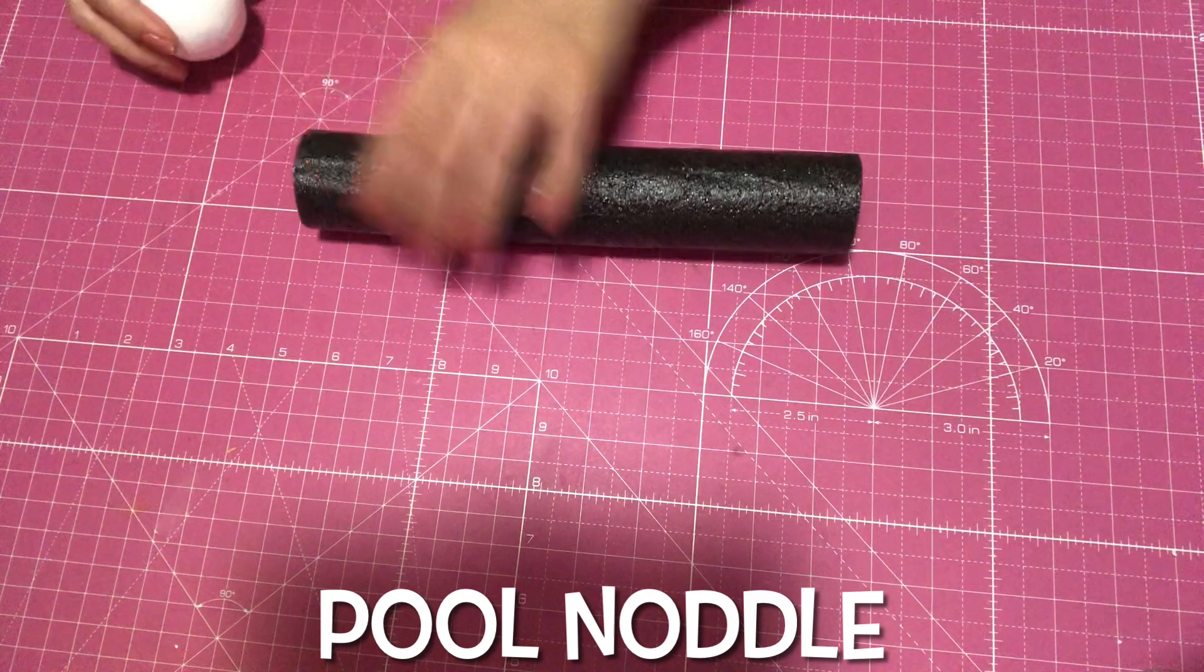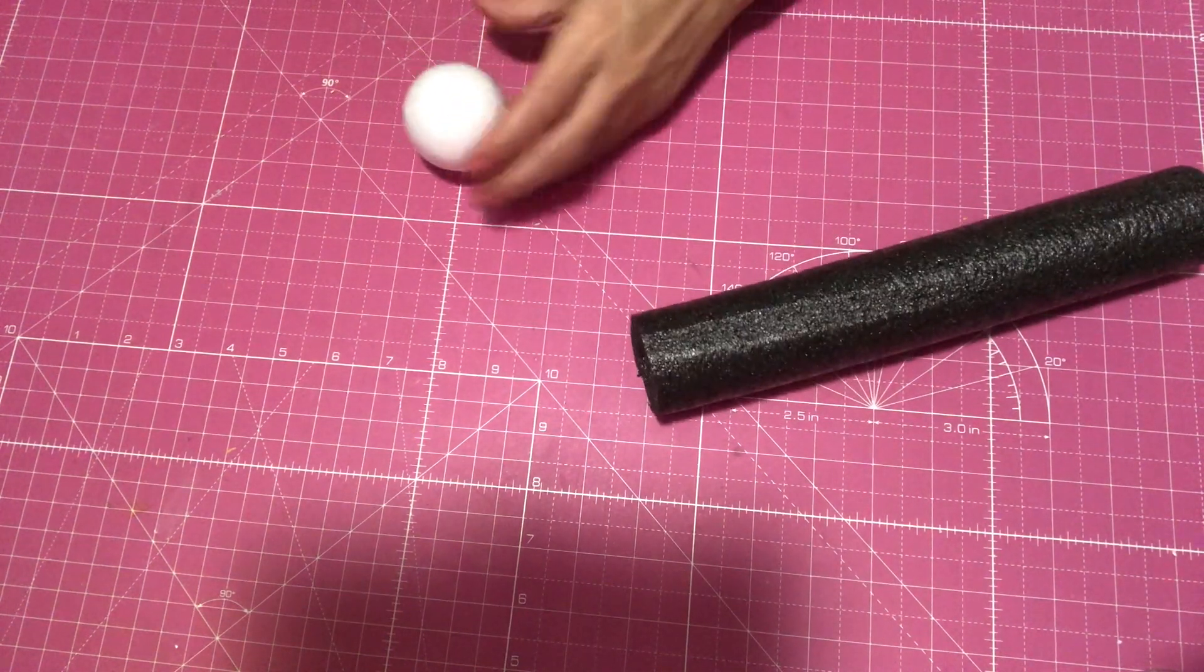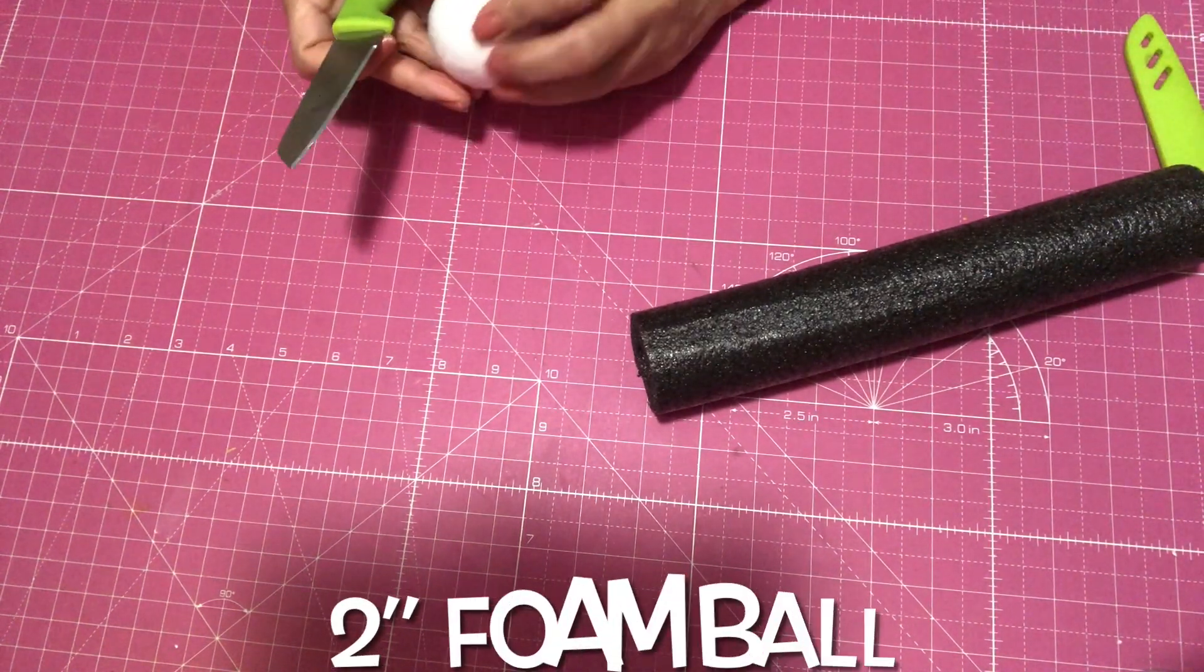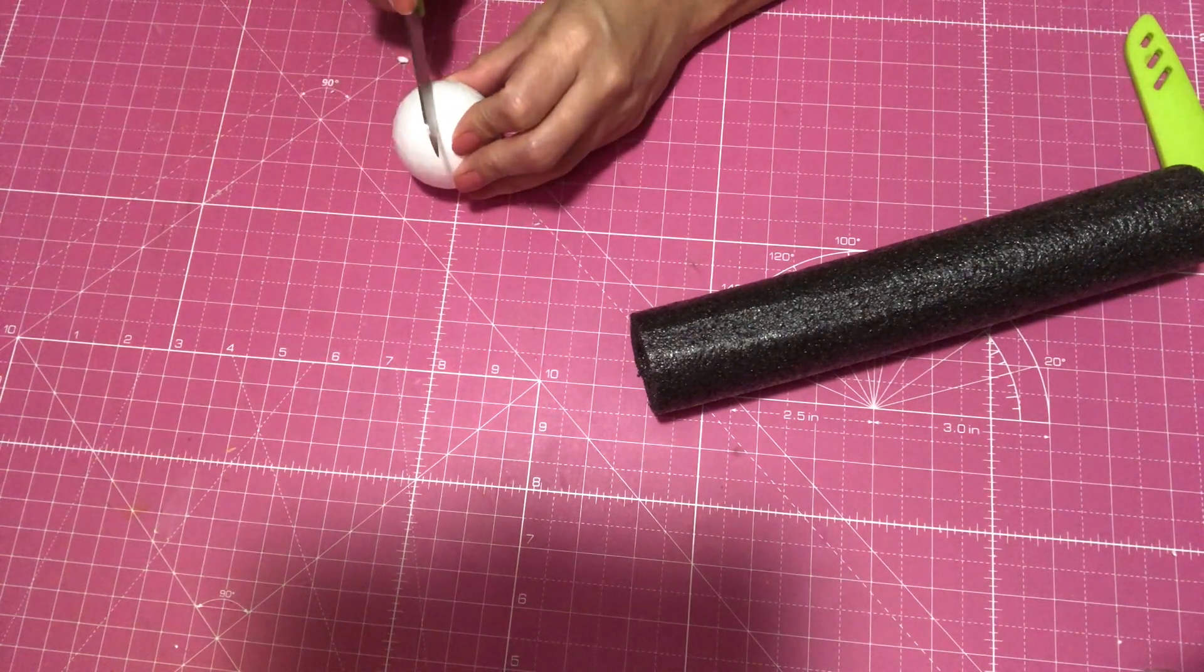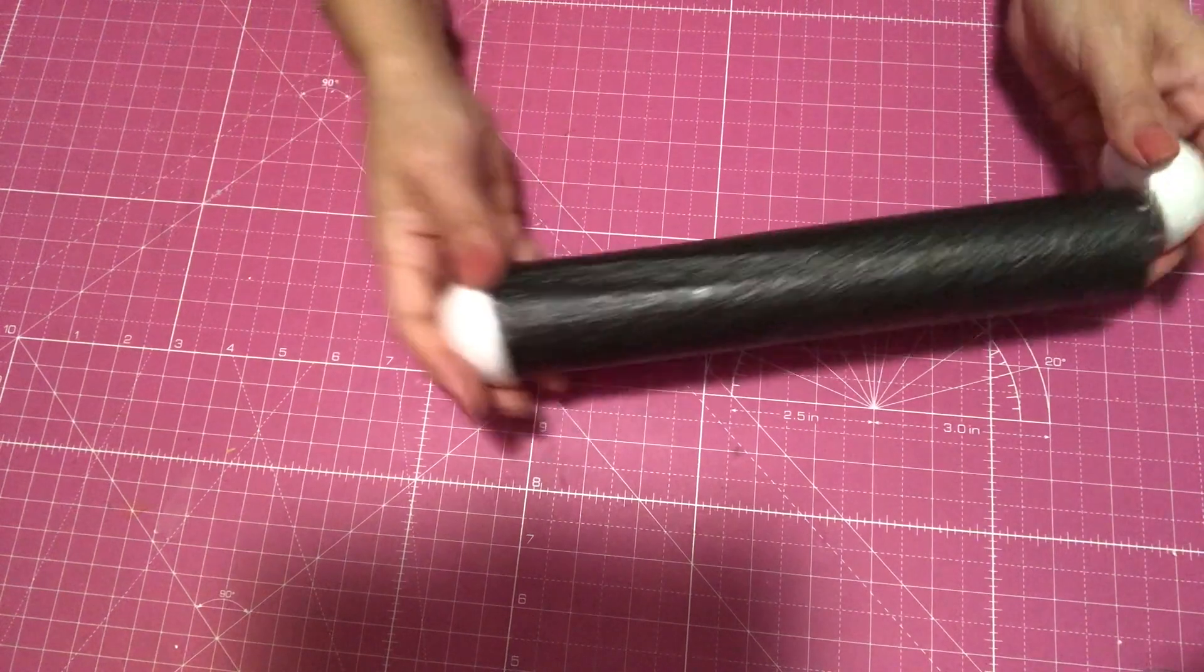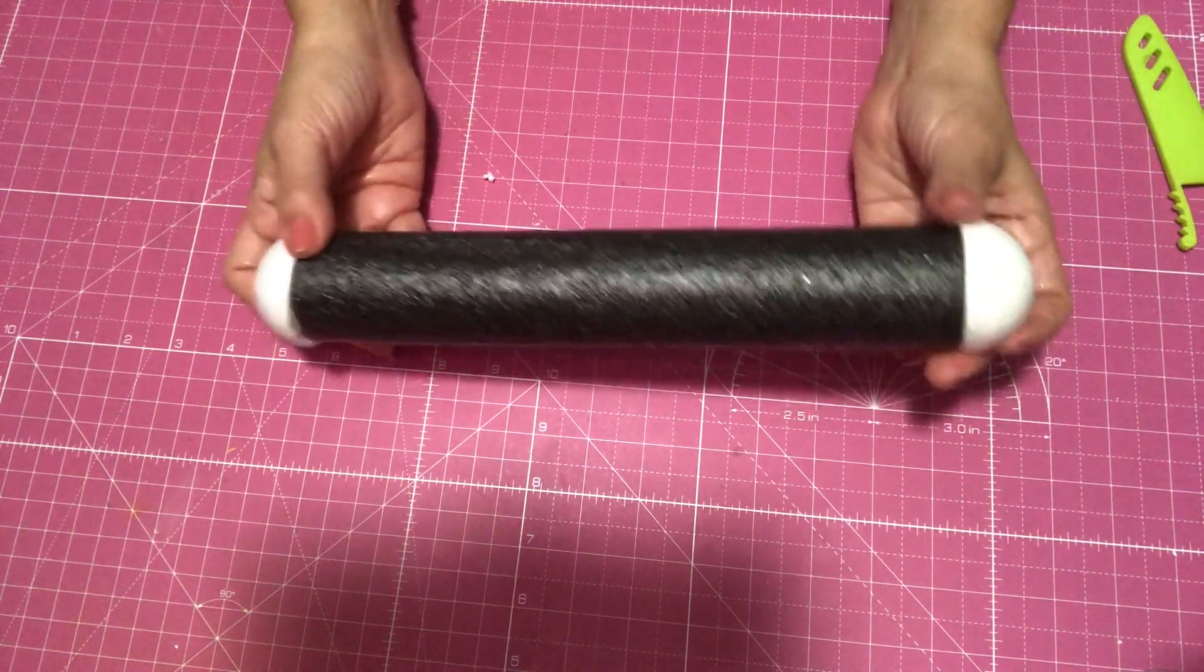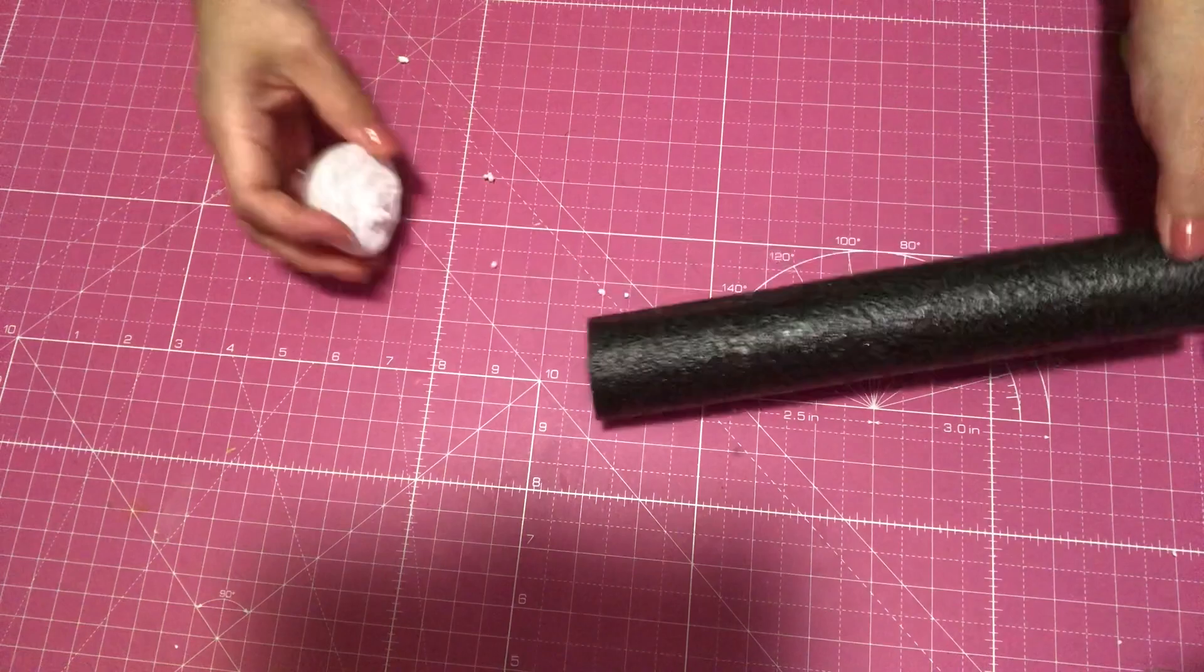Here I have a pool noodle and I'm going to cut it in half, and that's a two inch foam ball. Then I'm just going to glue each piece on each side and I'm going to use crazy glue.